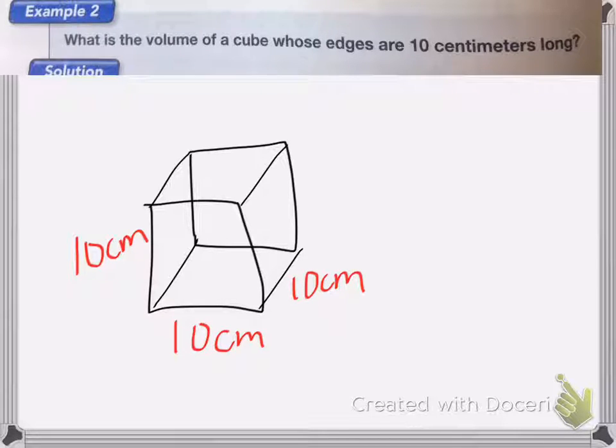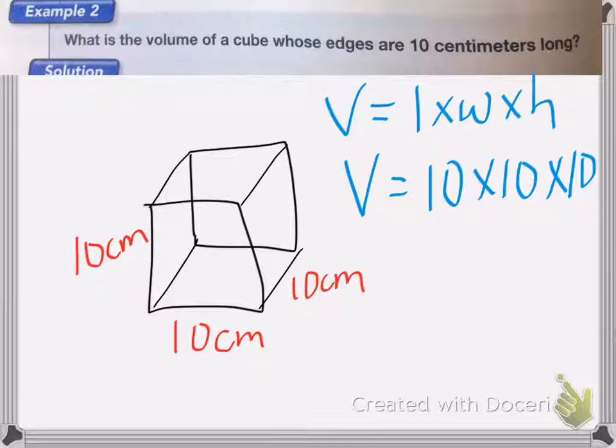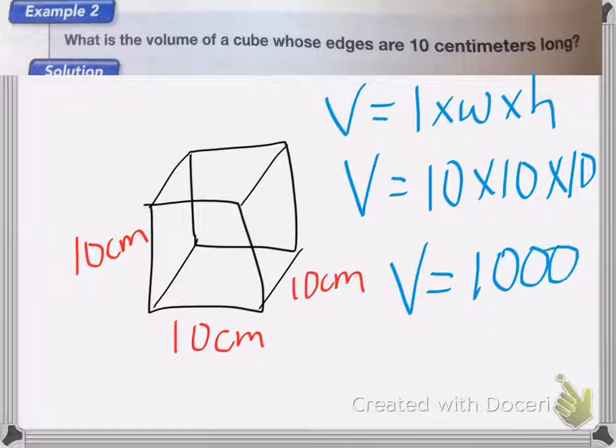Now to find the volume of a rectangular prism or a cube, the volume is equal to length times width times height. So if all the edges are 10 centimeters long, that means that each of these are going to be 10 centimeters. So my volume is going to be 10 times 10 times 10. So 10 times 10 is 100. 100 times 10 is 1000. So my volume is equal to 1000 centimeters cubed.